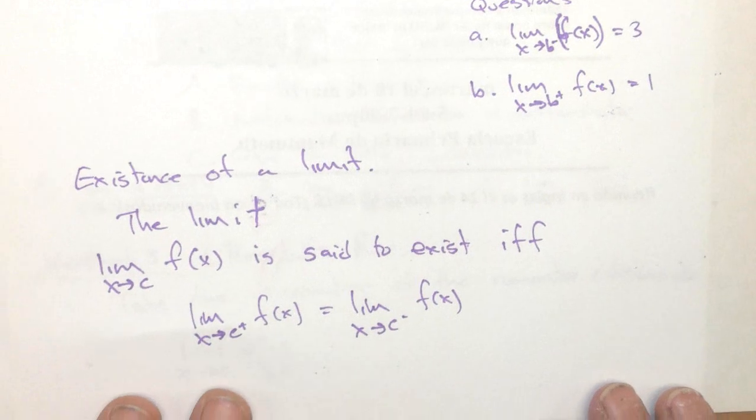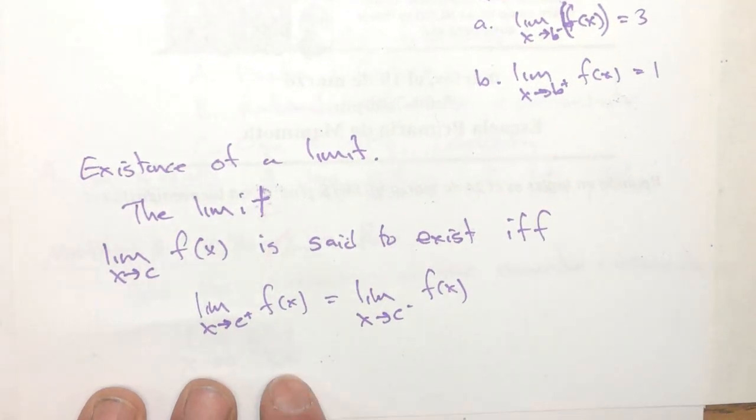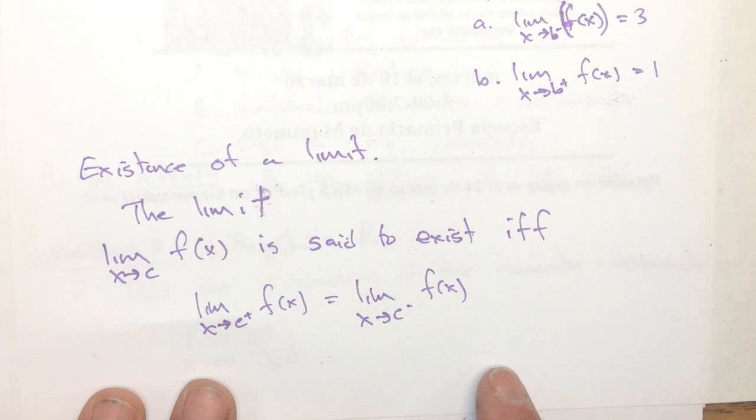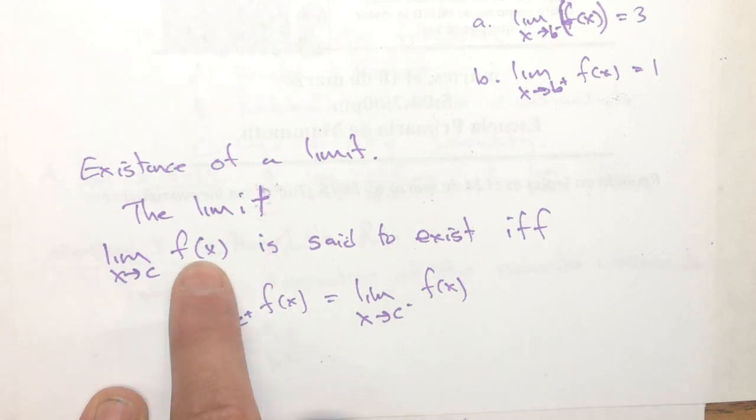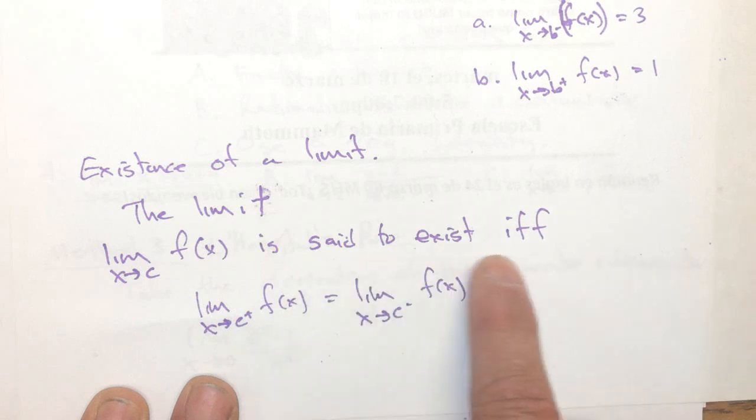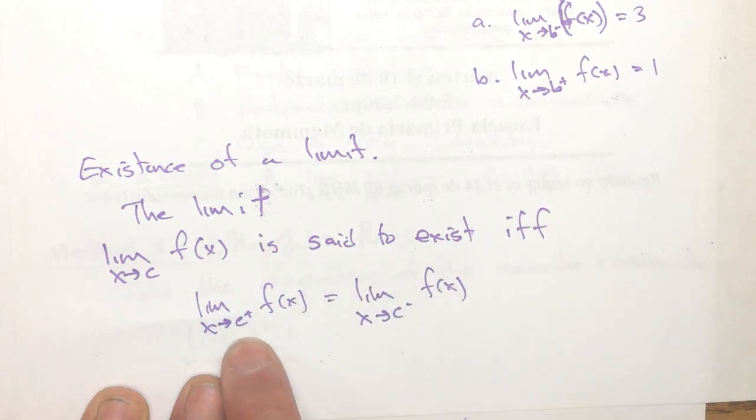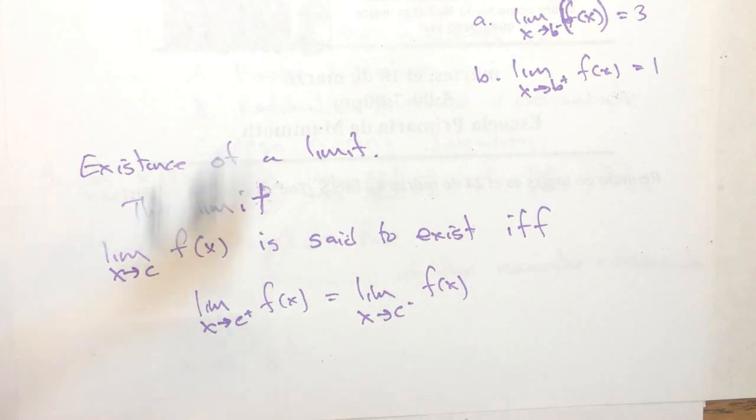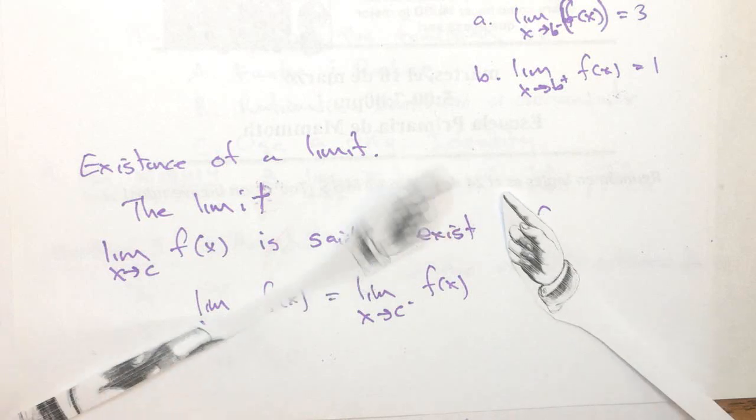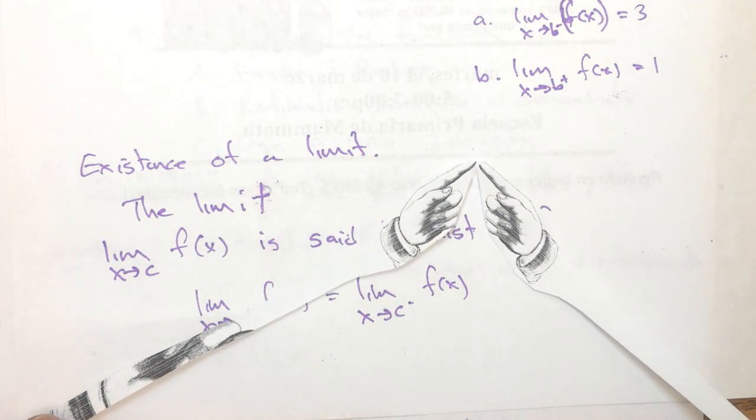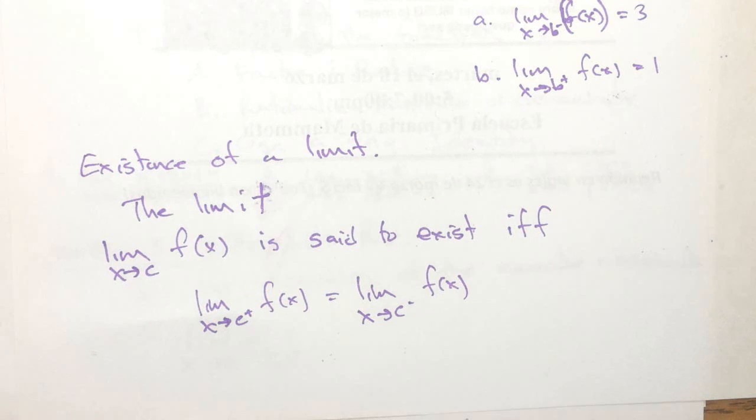Now the existence of a limit is something we looked at in this section, but it's valuable in later parts of the class. The limit as x approaches c of f(x) is said to exist if and only if the right-handed limit equals the left-handed limit. So if these two things are coming together and touching each other at a point...